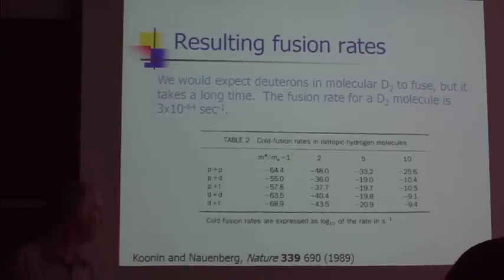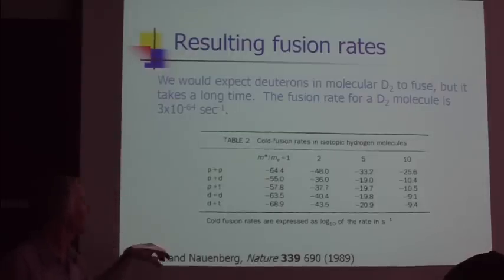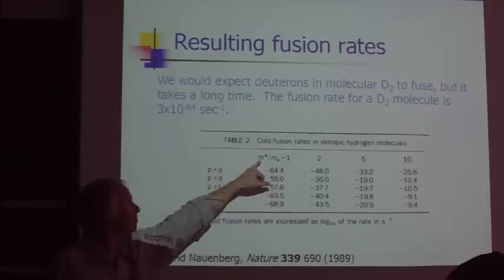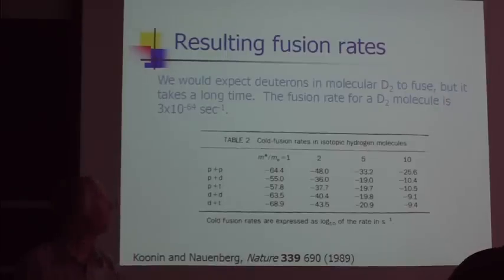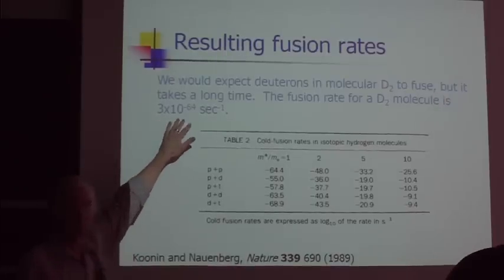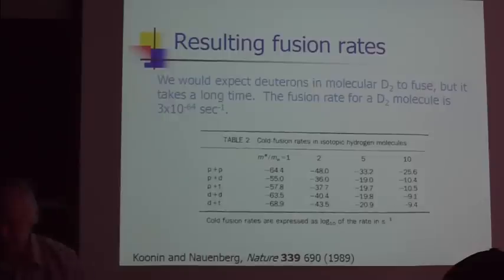Here's from Koonin and Nauenberg, a famous report. For example, for a DD fusion reaction with electron mass having its normal value, you get 10 to the minus 63.5 for reaction rate. So 3 times 10 to the minus 64 seconds is the lifetime of the deuterium molecule in the vacuum from this calculation. Very long time, very low tunneling probability, very small reaction probability.